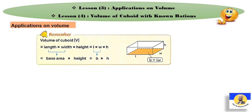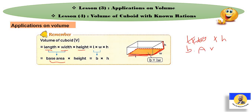Applications on Volume. Let's remember: Volume of Cuboid — if we have a cuboid, the volume equals length times width times height. Volume of Cuboid: it's length times width times height. We took this rule in Grade 5, Primary 5. Or alternatively: base area times height. The base area is the area of the base, which equals length times width.